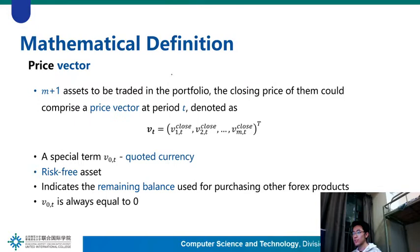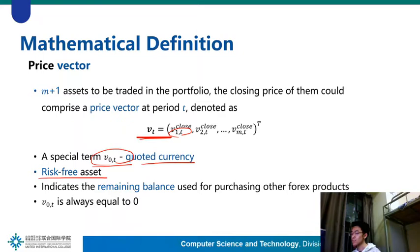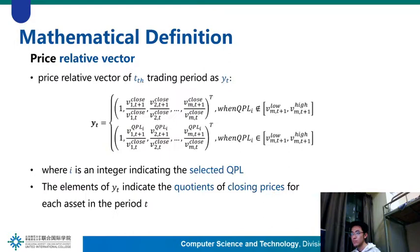If we select N+1 assets to be traded in the portfolio, the closing prices comprise a price vector at period T, denoted as VT, where VIT indicates the asset's closing price at period T. A special term, V0 in the portfolio, is called credit currency, indicating the remaining balance used for purchasing other products. As a risk-free asset, its value is always 1. We also define the price-relative vector of T trading period as YT, where I is an integer indicating the selected QPL, and the elements of YT indicate the potential of closing price for each asset in period T.